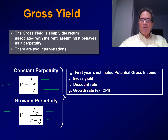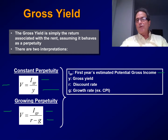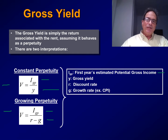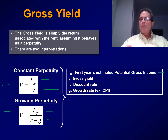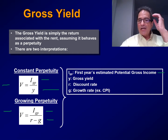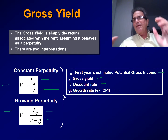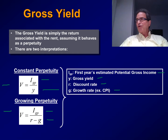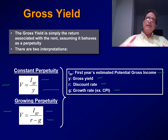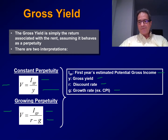The growth rate is the rate we assume the rent will have in the future forever. We define IGP, which is the numerator in these formulas, as the first year's estimated potential gross income. Y is the gross yield, R is the implied discount rate, and G is the growth rate. The growth rate is usually assumed to be equal to the consumer price index, under the assumption that the rent can be adjusted with inflation year after year.